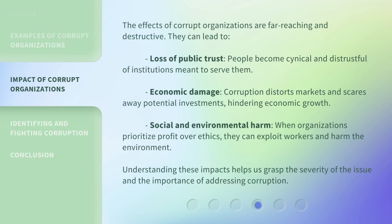The effects of corrupt organizations are far-reaching and destructive. They can lead to loss of public trust — people become cynical and distrustful of institutions meant to serve them. Economic damage: corruption distorts markets and scares away potential investments, hindering economic growth. Social and environmental harm: when organizations prioritize profit over ethics, they can exploit workers and harm the environment. Understanding these impacts helps us grasp the severity of the issue and the importance of addressing corruption.